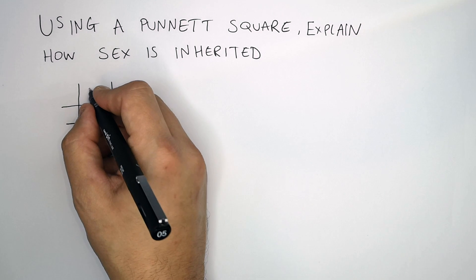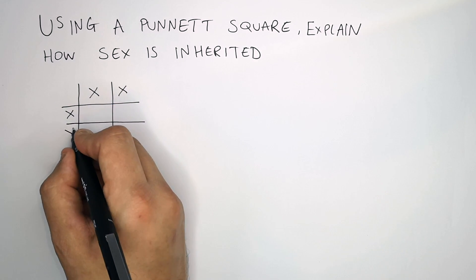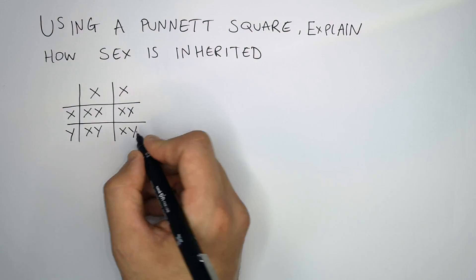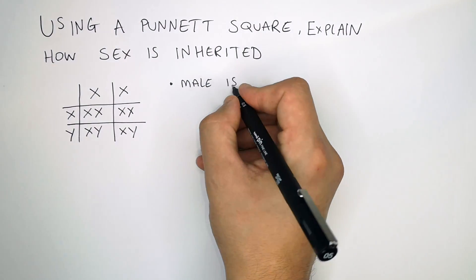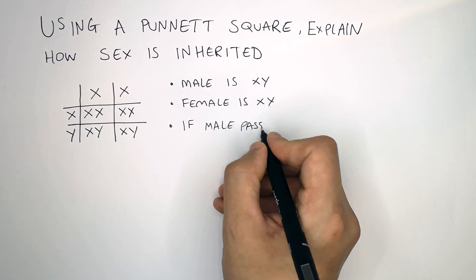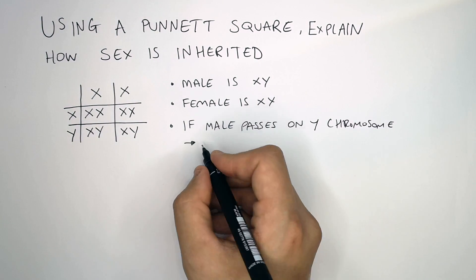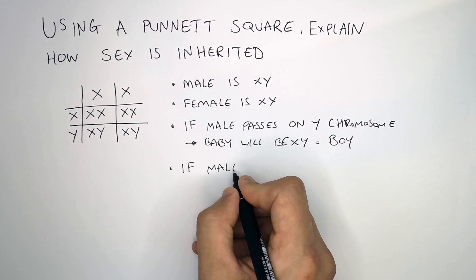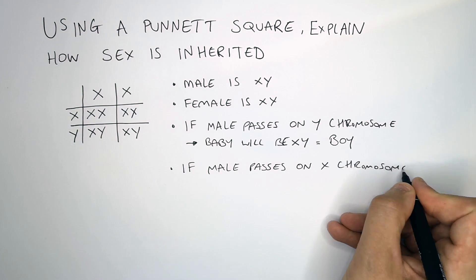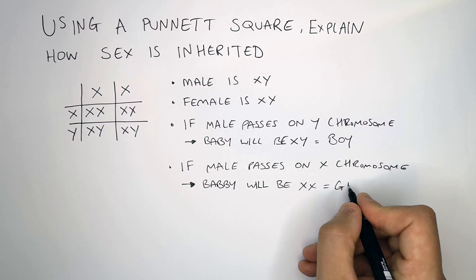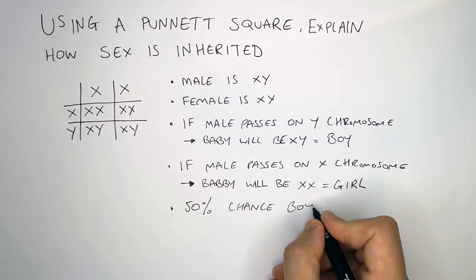You put the gametes at the top and the side. The woman will be XX and the male will be X or Y. If you do the cross, you'll get two XXs and two XYs. The male is XY and the female is XX. If the male passes on the Y chromosome, the baby will be XY and will be a boy. If the male passes on the X chromosome, the baby will be XX and will be a girl. So there's a 50% chance of boy or girl.